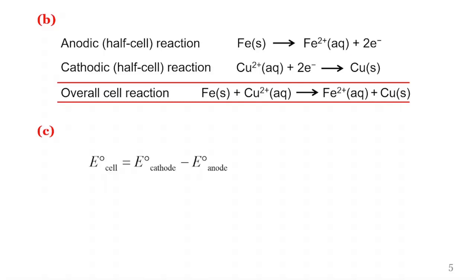To obtain the cell potential, we take the difference between the standard potential of the cathode compartment and that of the anodic compartment. So this is copper standard reduction potential minus that of iron. That gives 0.34 minus negative 0.44, which evaluates to 0.78 volts.